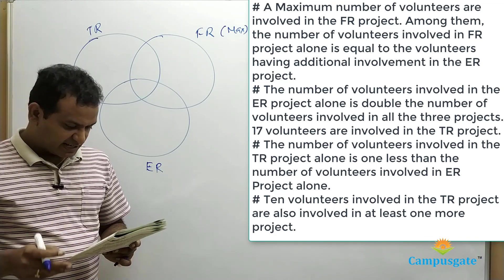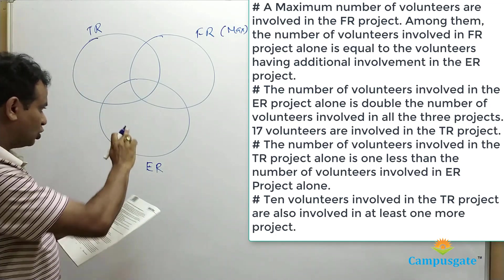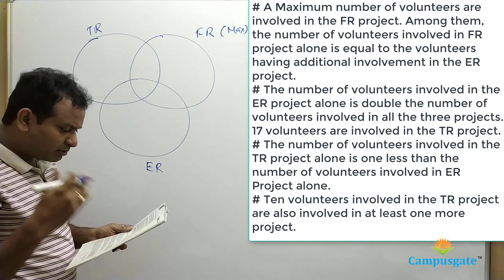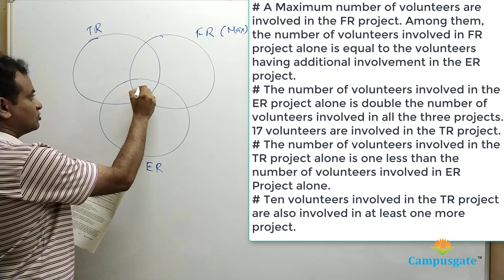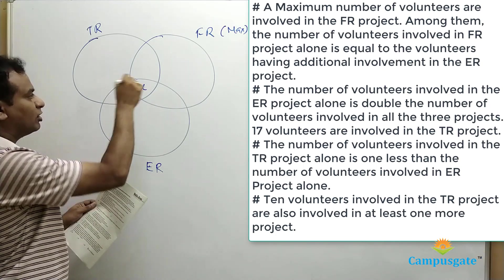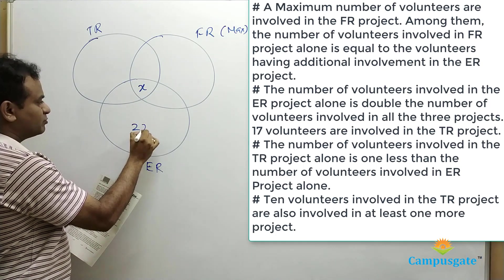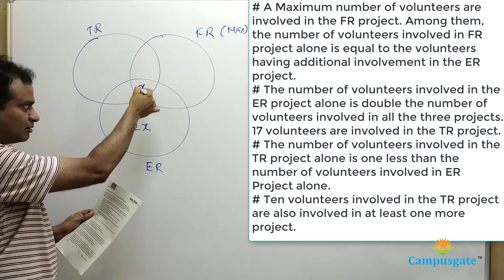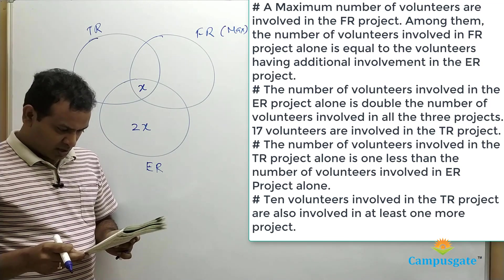Look at the next clue. The number of volunteers involved in ER project alone is double the number of volunteers involved in all three projects. So let us say the number of people involved in all three projects is equal to X; then ER alone should be 2X, because this region should be double that number.